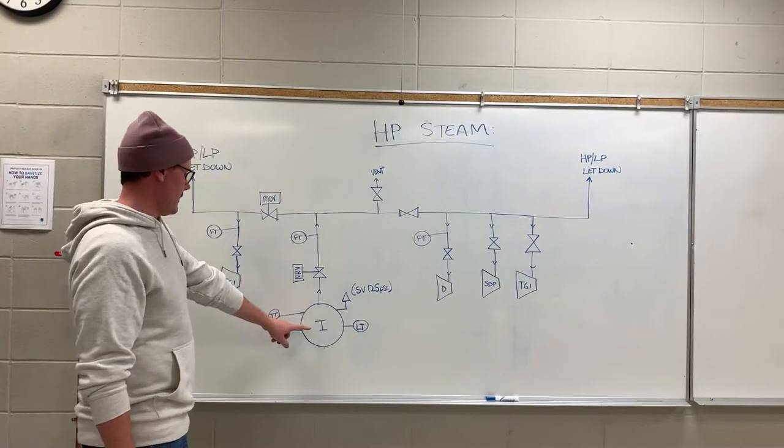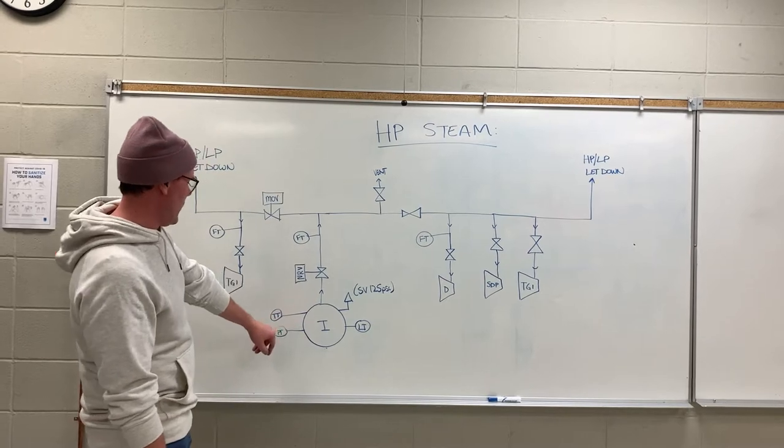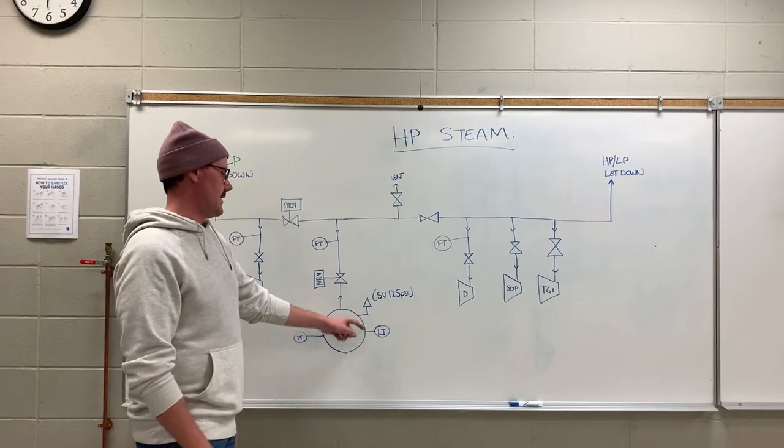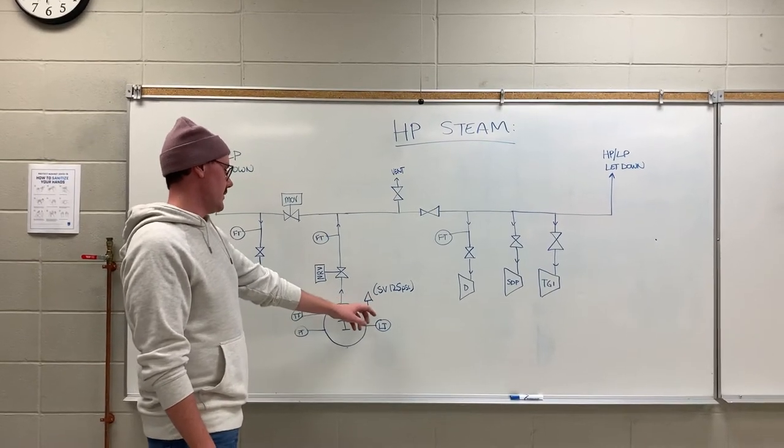So we start off in the A-list boiler where we have a pressure transmitter, a temperature transmitter, and a level transmitter. It also has a safety valve that is set to 125 psi.